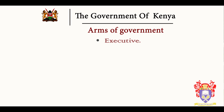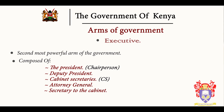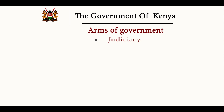Then we have the executive — the second most powerful arm of government, which implements the laws. The executive arm is chaired by the president and is composed of the president, deputy president, cabinet secretaries (CS), the attorney general, the secretary to the cabinet, and all other civil servants. For example, the police are part of the executive because they maintain law and order. Doctors and teachers also implement the law — they put it into practice. So that is part of the executive.